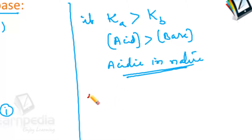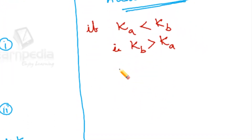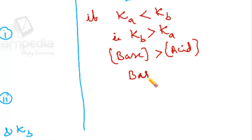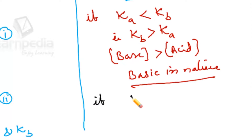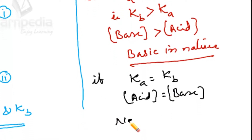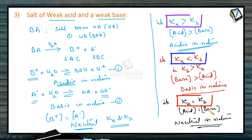The pH will be less than 7. But if KA is less than KB, that is KB is greater than KA — the relative strength of the base is more than that of the acid — the solution will become basic in nature. And if KA is equal to KB, that is the relative strength of acid equals that of the base, both being of equal strength, then the solution will be neutral. The actual nature of the solution depends on the KA and KB values.